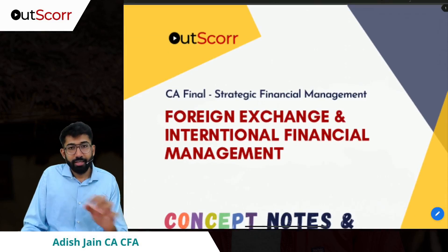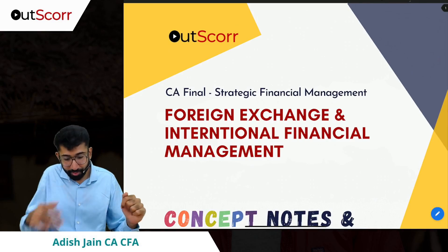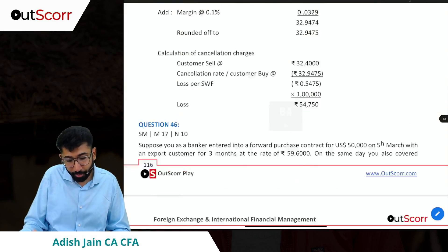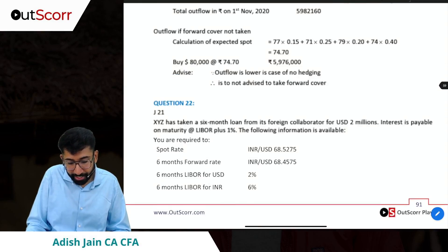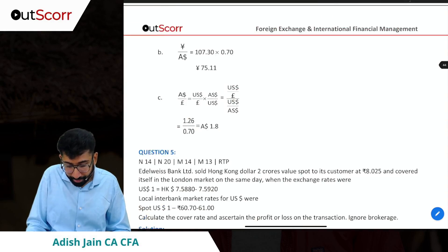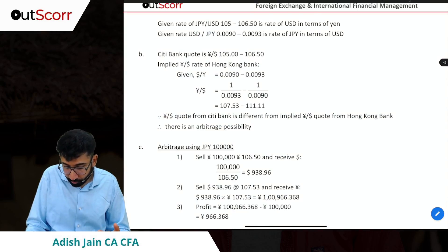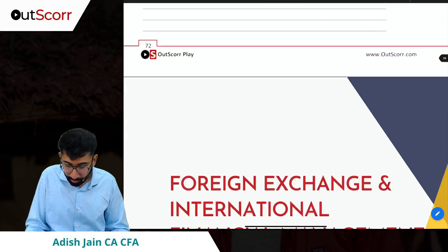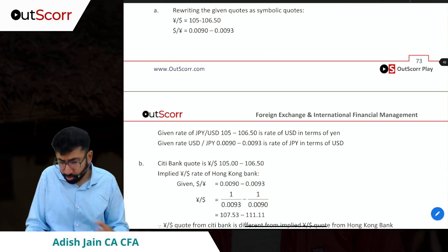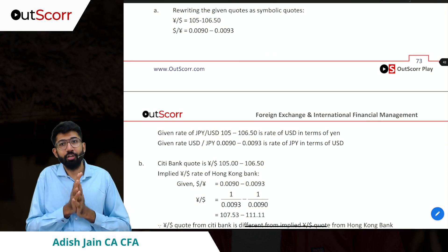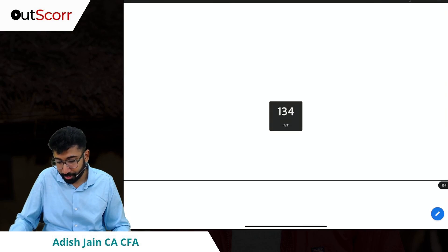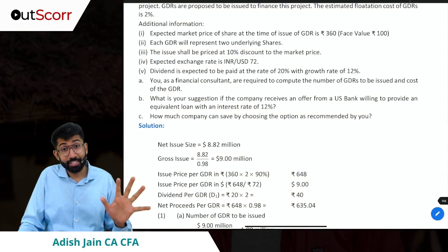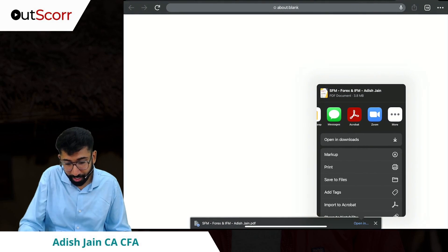Similarly, just like the notes I shared in case of derivatives, notes start with concepts notes initially. After the concepts notes, practical questions start. In case of practical questions, please don't worry about the page numbers — there may be some page number issues, we are starting directly around page 74. Maybe some page numbers here and there can vary, but don't worry at all. Coverage is full, everything has been covered till May 2022 examinations. Approximately 96 questions covering full Forex and International Financial Management.